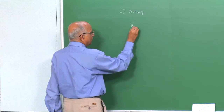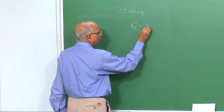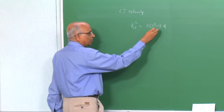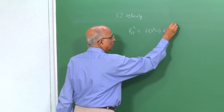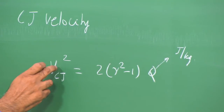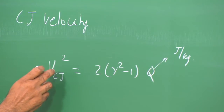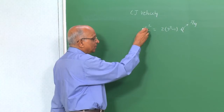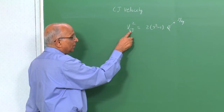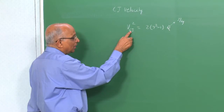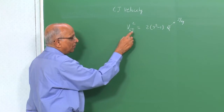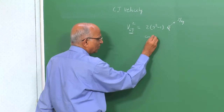We found this velocity: V_CJ squared is equal to 2(γ² - 1) times the heat released by the chemical reactions Q, where Q is in joules per kilogram. This gives the velocity. We said the Chapman-Jouguet velocity is a constant since it corresponds to the tangency point between the reactive Hugoniot and the Rayleigh line. The velocity behind the detonation becomes equal to the local sonic conditions, and therefore it is not possible for disturbances to catch up with the detonation. Thus V_CJ is a steady state or constant velocity.